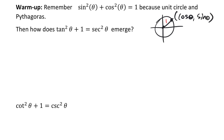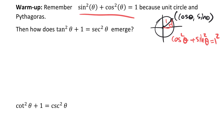The hypotenuse will be 1. And because those coordinates could be drawn as a little right triangle, we have cos squared theta plus sine squared theta equals 1 squared. Then we simply simplify our formula, and we get this.